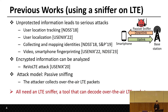Previous work shows that unprotected information leads to serious attacks, such as user location tracking, user localization, collecting and mapping identities, and video smartphone fingerprinting. Collecting encrypted information is also useful — for example, a downgrade attack can break encrypted phone calls.